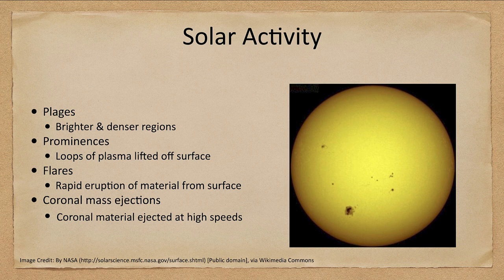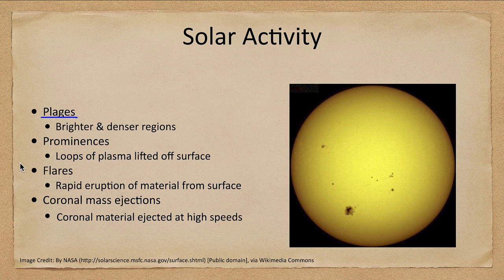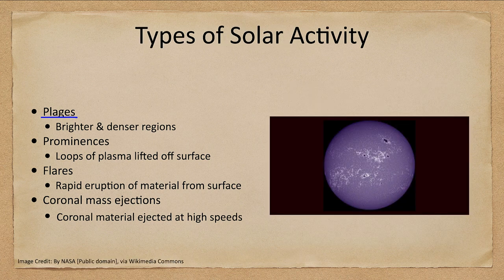We talked previously about sunspots, but that's not the only type of solar activity that we get. We also get other areas, including the plages, which are brighter and denser regions that we see on the surface. We can see those in an area around here — they are associated with sunspots as well, but spread out over a much wider area.